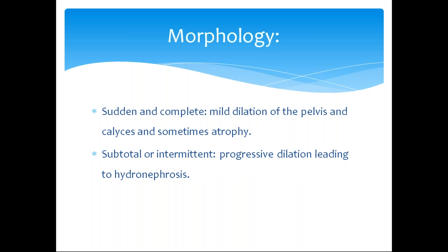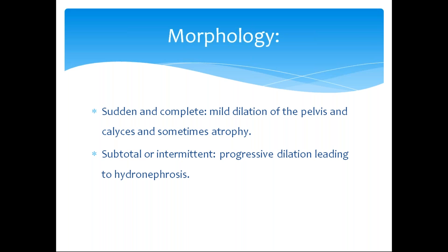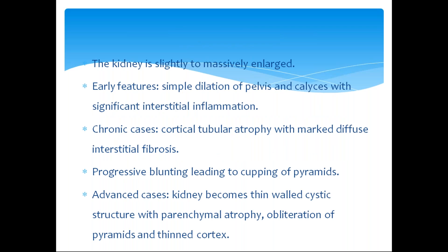Moving on to morphology, there are two mechanisms: subtotal or intermittent, and sudden and complete obstruction. Sudden complete obstruction may not give time for the kidney to undergo atrophy or maximal dilation. Subtotal or intermittent obstruction leads to progressive dilation with hydronephrosis and marked cortical atrophy. The kidney is likely to be massively enlarged. Early features include simple dilation of the pelvis and calyces with significant interstitial inflammation. In chronic cases, there is cortical tubular atrophy with marked interstitial fibrosis.